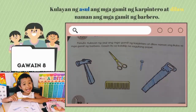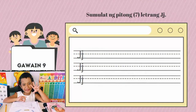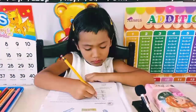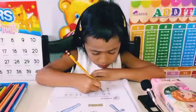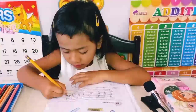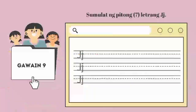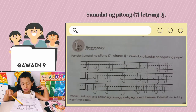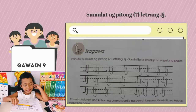Ang mga gamit ng karpentero at barbero. Sumulat ng pitong letrang J. Tara, sulat na tayo! Isa, dalawa, tatlo, apat, lima, anim, pito — pitong letrang J.